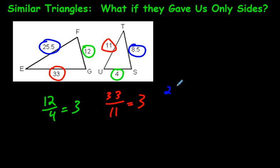This is kind of a strange one. 25.5 divided by 8.5. And if you do that on a calculator, because it's a little bit trickier. I'm just doing it on my handheld calculator here, instead of on the screen. And I got 3 as well. So these two triangles are similar.